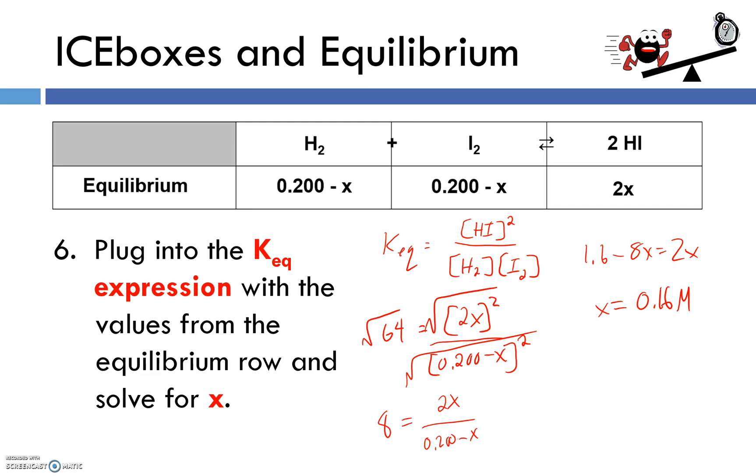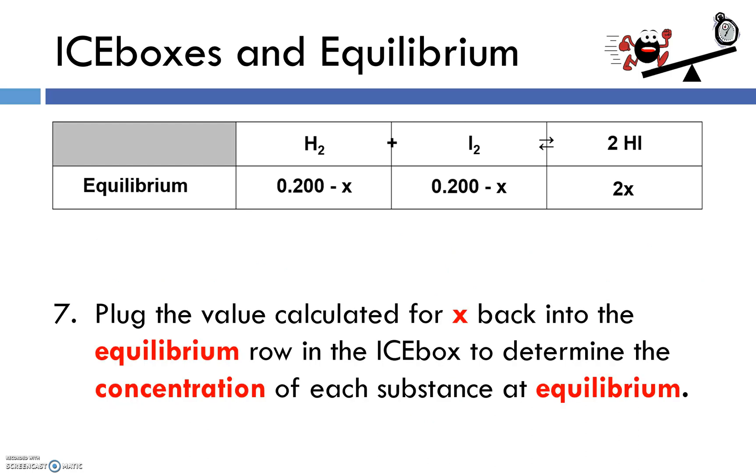A rookie mistake is to celebrate too early and assume that you're finished because you have a number. You just know the value of x. We've got to go back to that bottom row of the icebox and plug in, so we know that x is 0.16 molar, so 0.2 minus 0.16. Don't worry too much about sig figs. If you can sort out iceboxes, I'll cut you some slack on the sig figs. And that's it. So at equilibrium, I should have a concentration of 0.04 molar for hydrogen and iodine gases, and I should have a concentration of 0.32 molar for hydrogen iodide.